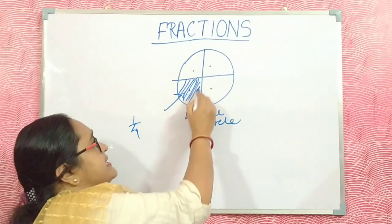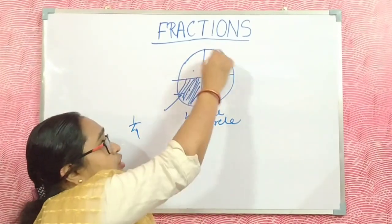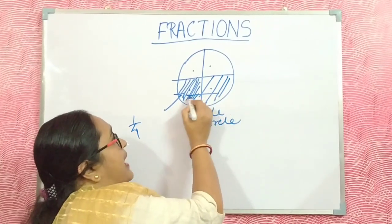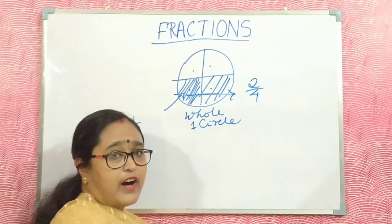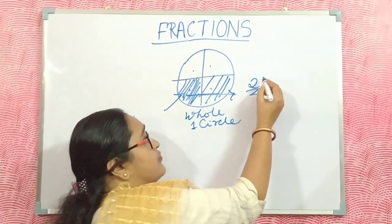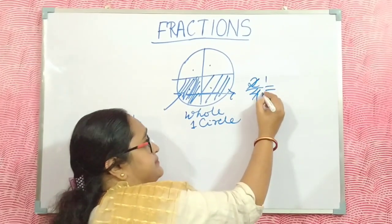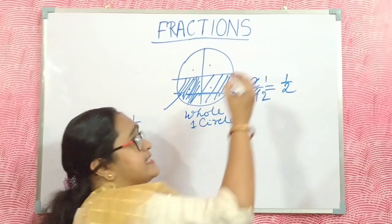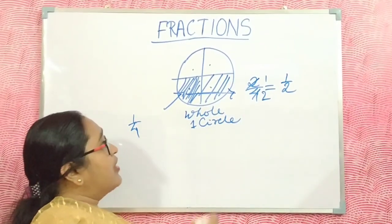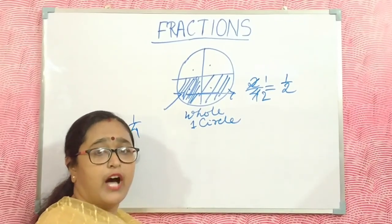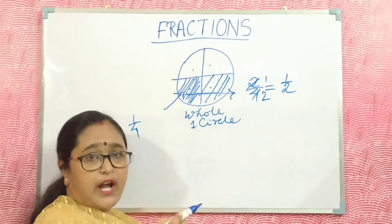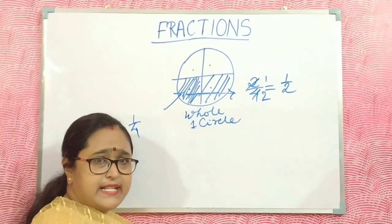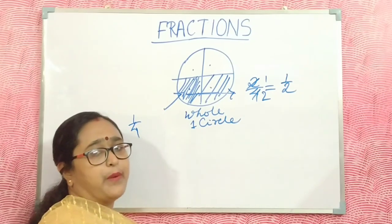Now I just colored it. This is the one-fourth part of a whole circle. If I color two parts together, this is called two-fourth part of a whole. I can write two-fourth and divide it by two — so two-fourths is also called half. The fraction: one part out of four parts is one-fourth, and two parts is two-fourth.